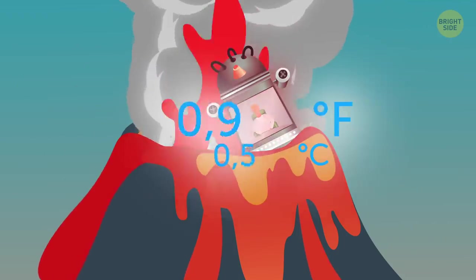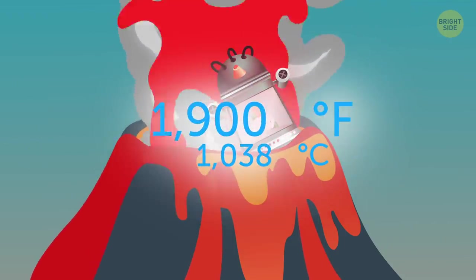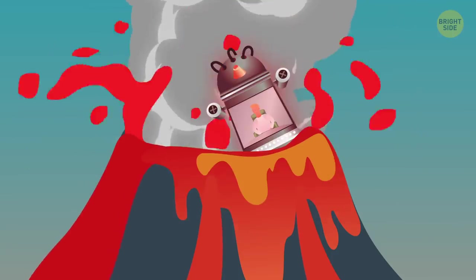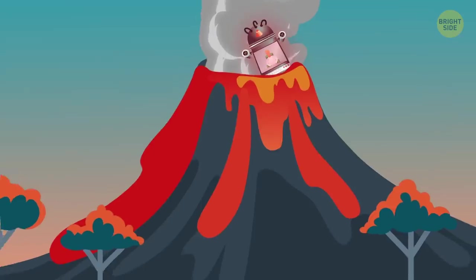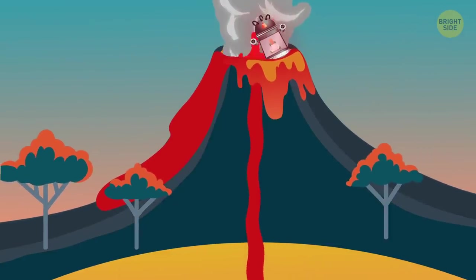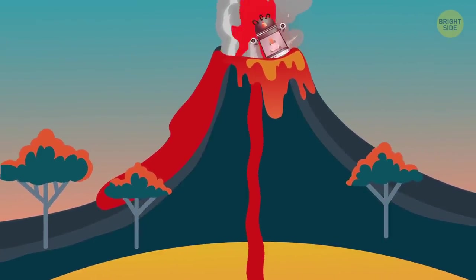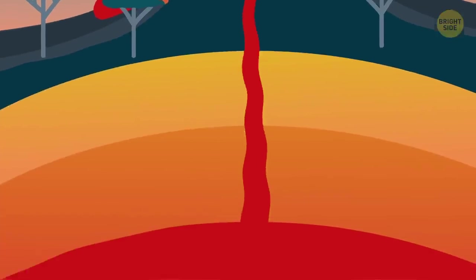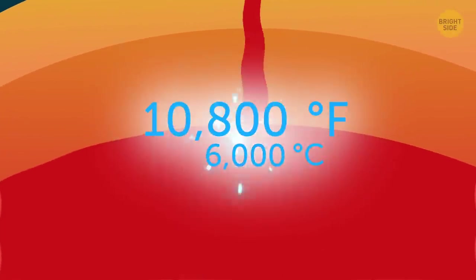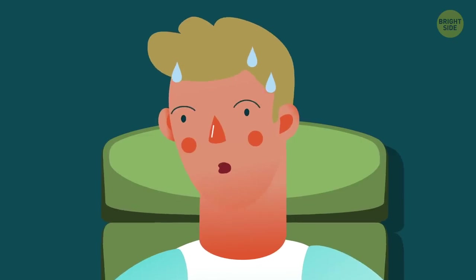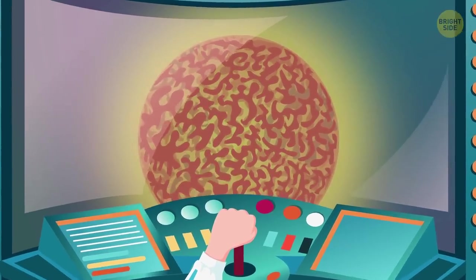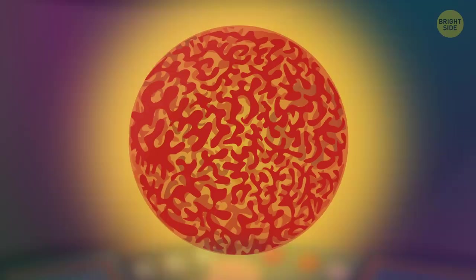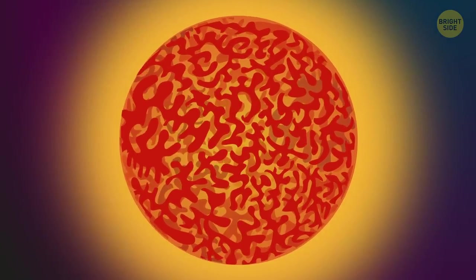The next temperature stop is 1,900 degrees, and it measures the heat of a volcanic eruption. Well, the lava spewing out of it, to be precise. And if I dive deeper into this volcano, I mean all the way down to the Earth's core, the equipment will show me a temperature of 10,800 degrees Fahrenheit. That's how hot the core of our planet is. Way to go, Earth! That's hotter than the surface of the Sun, which is only 9,941 degrees.